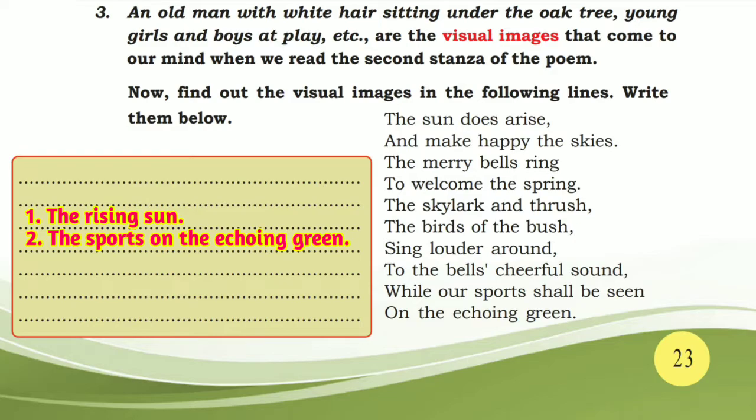Activity 3: an old man with white hair sitting under the oak tree, and young girls and boys at play — these are the visual images that come to our mind when we read the second stanza of the poem.